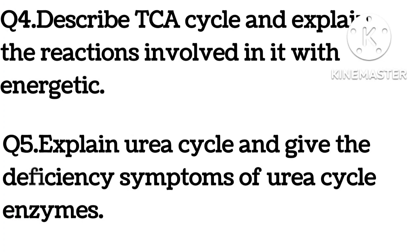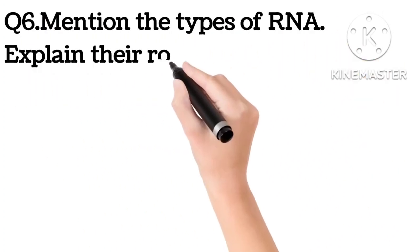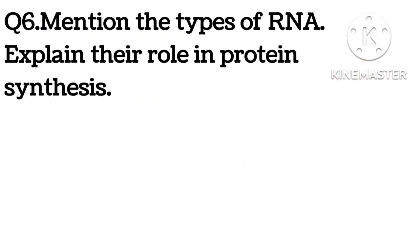The fifth one: explain the urea cycle and give the deficiency symptoms of urea cycle enzymes. This is a very important cycle — draw the cycle, explain the terms, and write the energetics. One point to remember: for 10 marks, you must write a minimum of five pages.